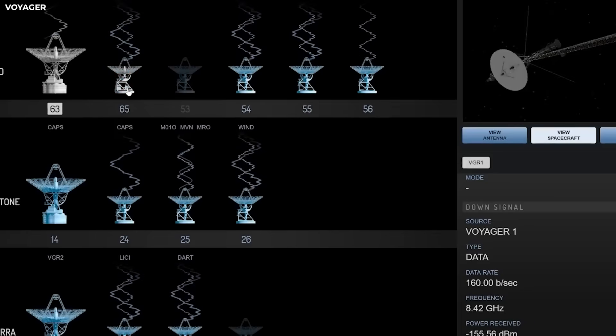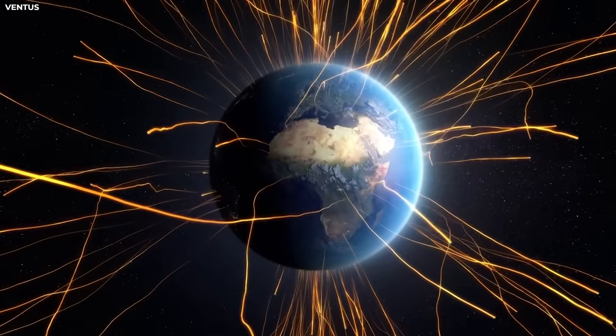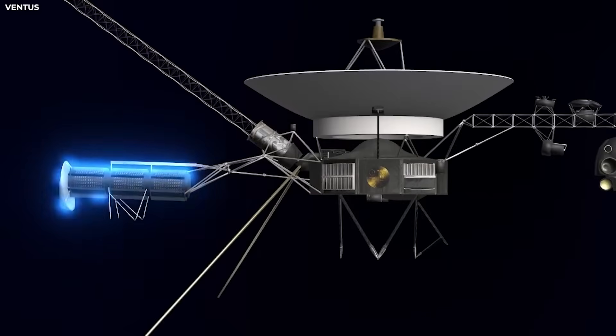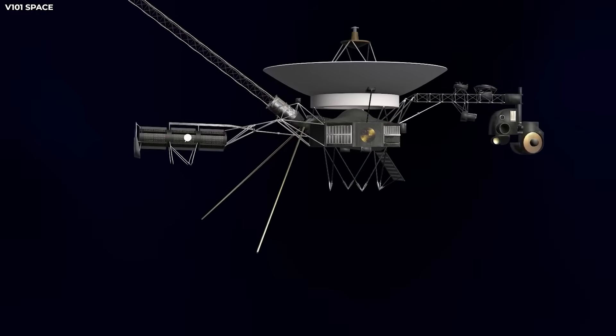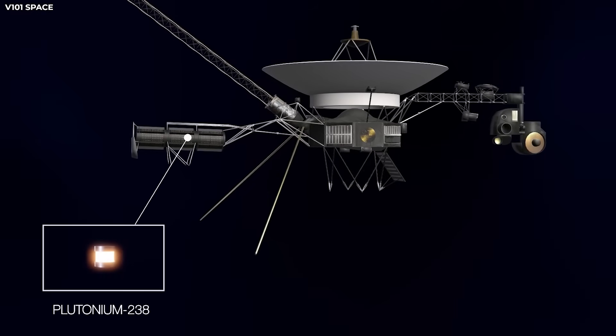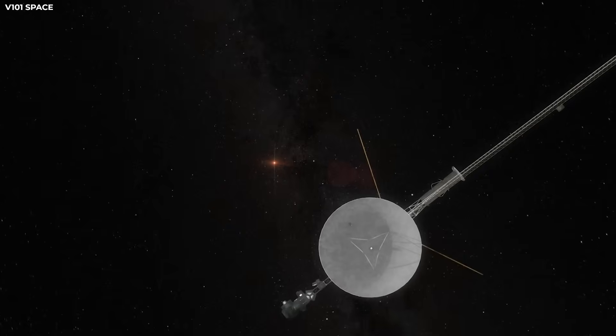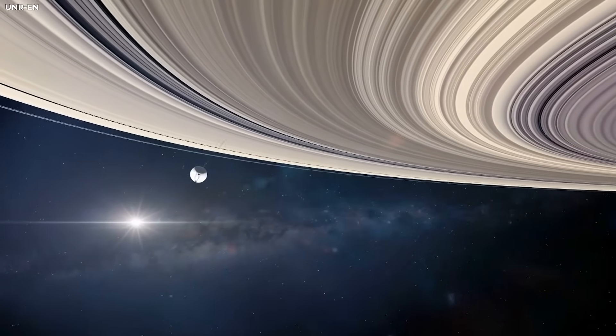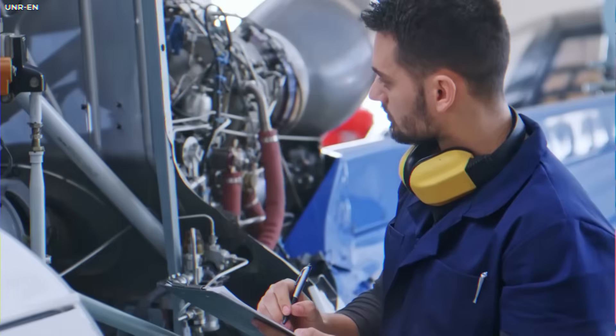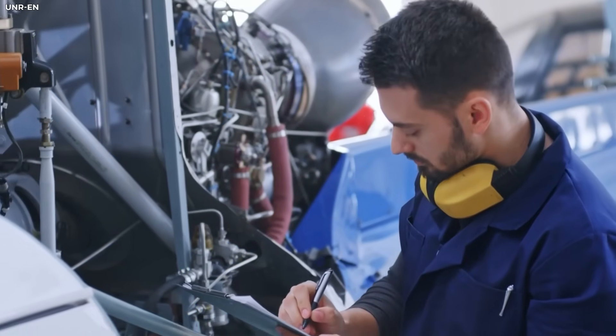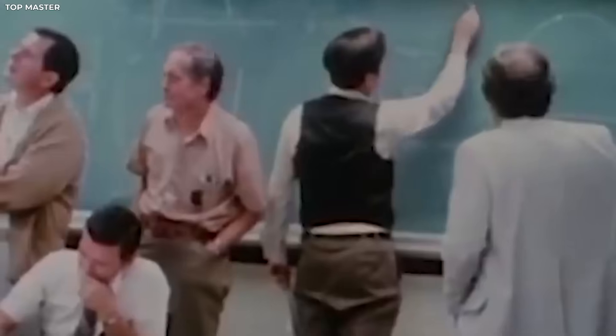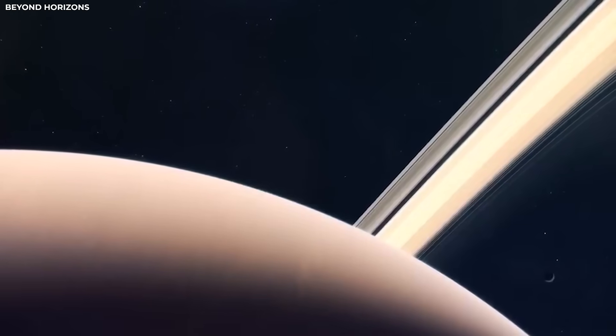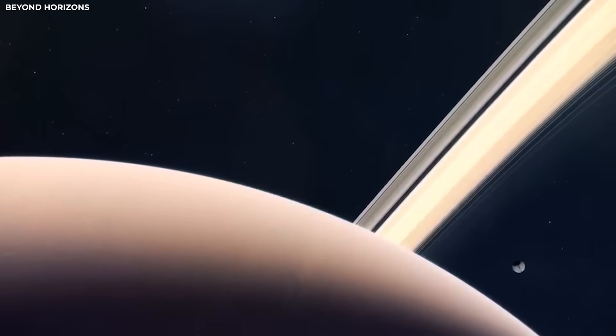Voyager 2 runs on old technology. Its signal strength is only 23 watts, about the same as a refrigerator light bulb. But even with such a small signal, it's always sending and receiving across billions of miles. That steady little voice may have picked up something newer machines would miss. Its simple design might be part of the reason it worked so well. It doesn't filter or block as much as modern systems do. That means it's better at picking up strange or subtle things.